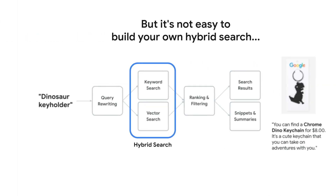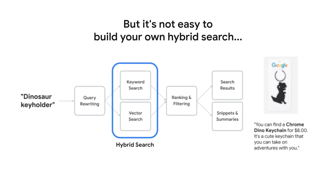Building a hybrid search engine used to be quite a feat. Imagine having to build two separate search engines — one that understands the meaning of your words, and another that focuses on specific words themselves. Then you'd have to combine the results from both and figure out how to rank them.